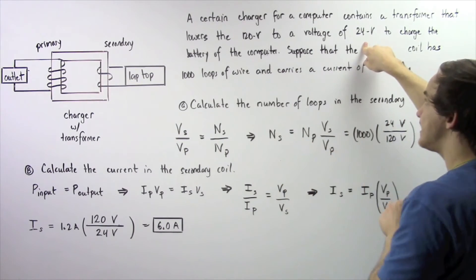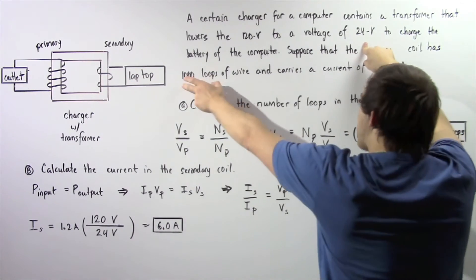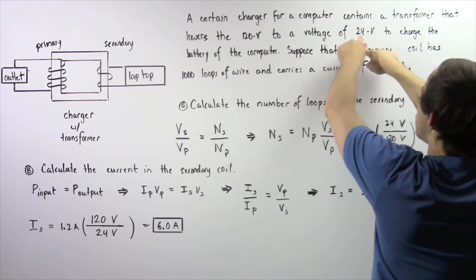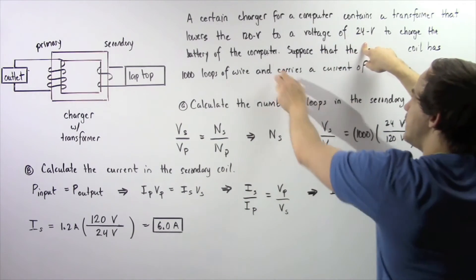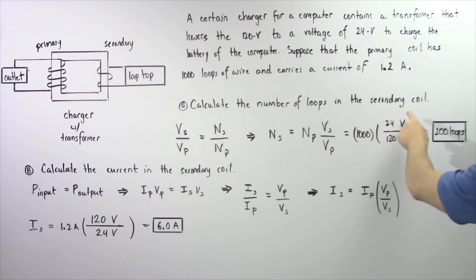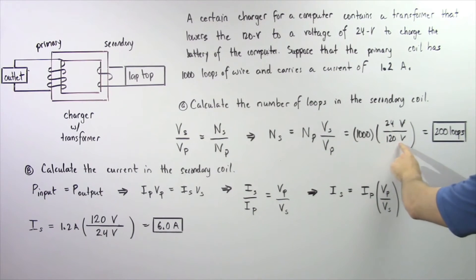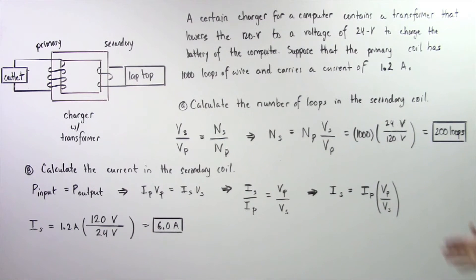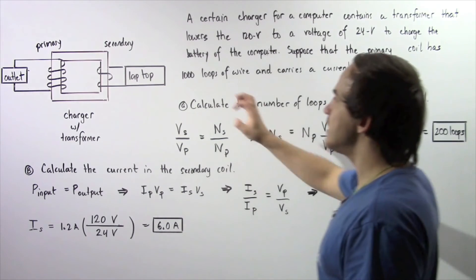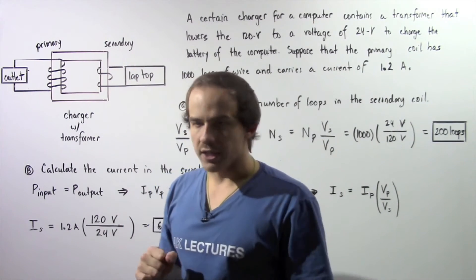We know Np is 1000 loops, Vs is 24 volts, and Vp is 120 volts. So: 24 divided by 120 gives 0.2, multiplied by 1000 gives us 200 loops of wire in the secondary coil.